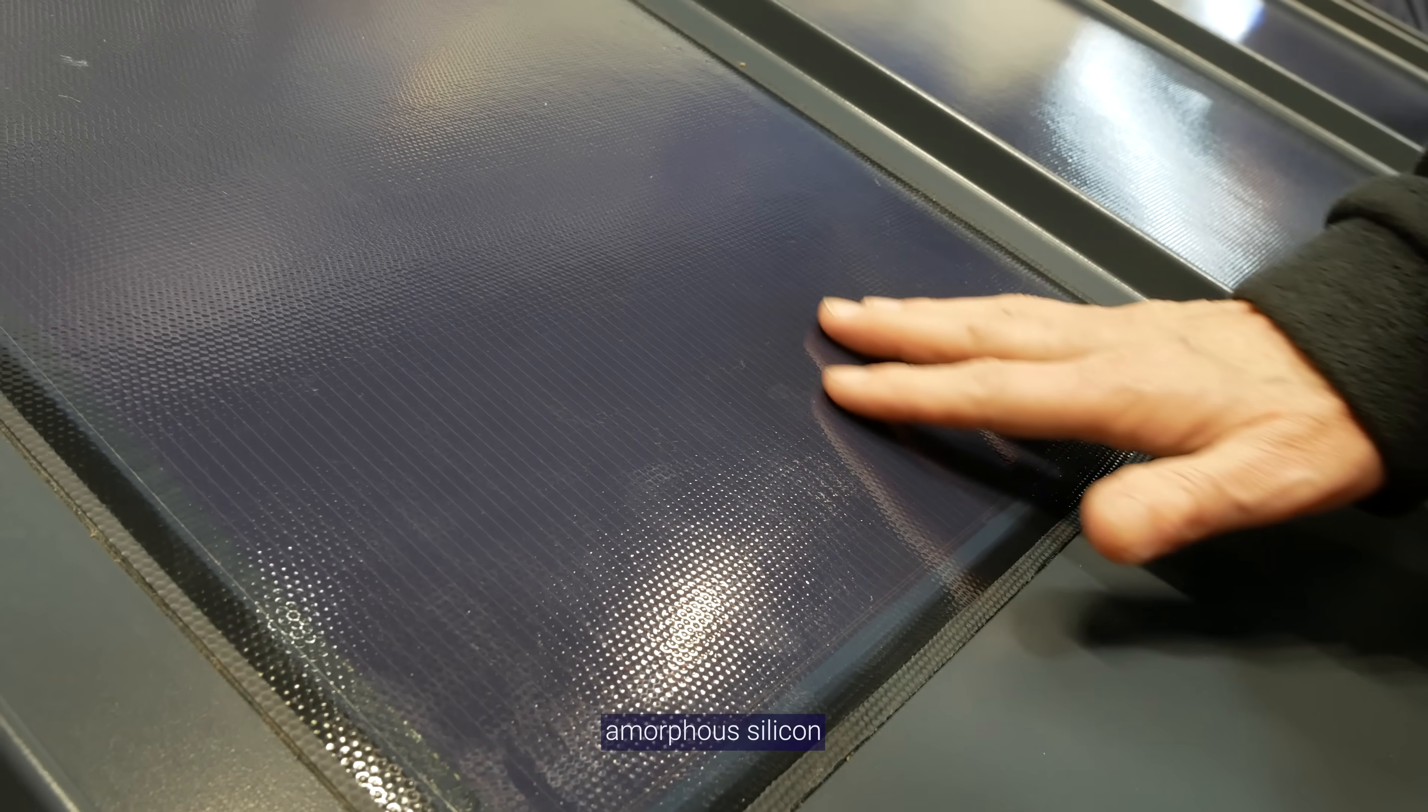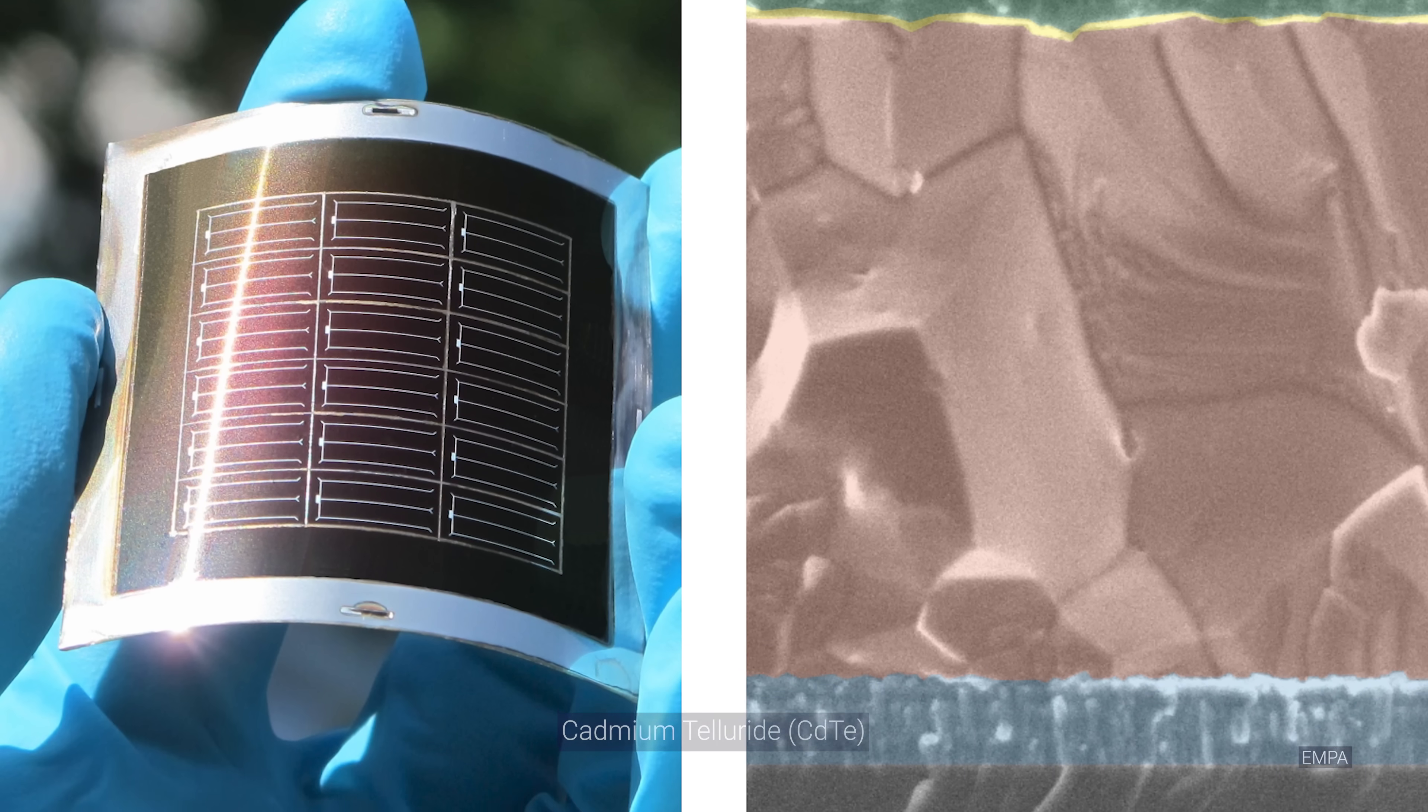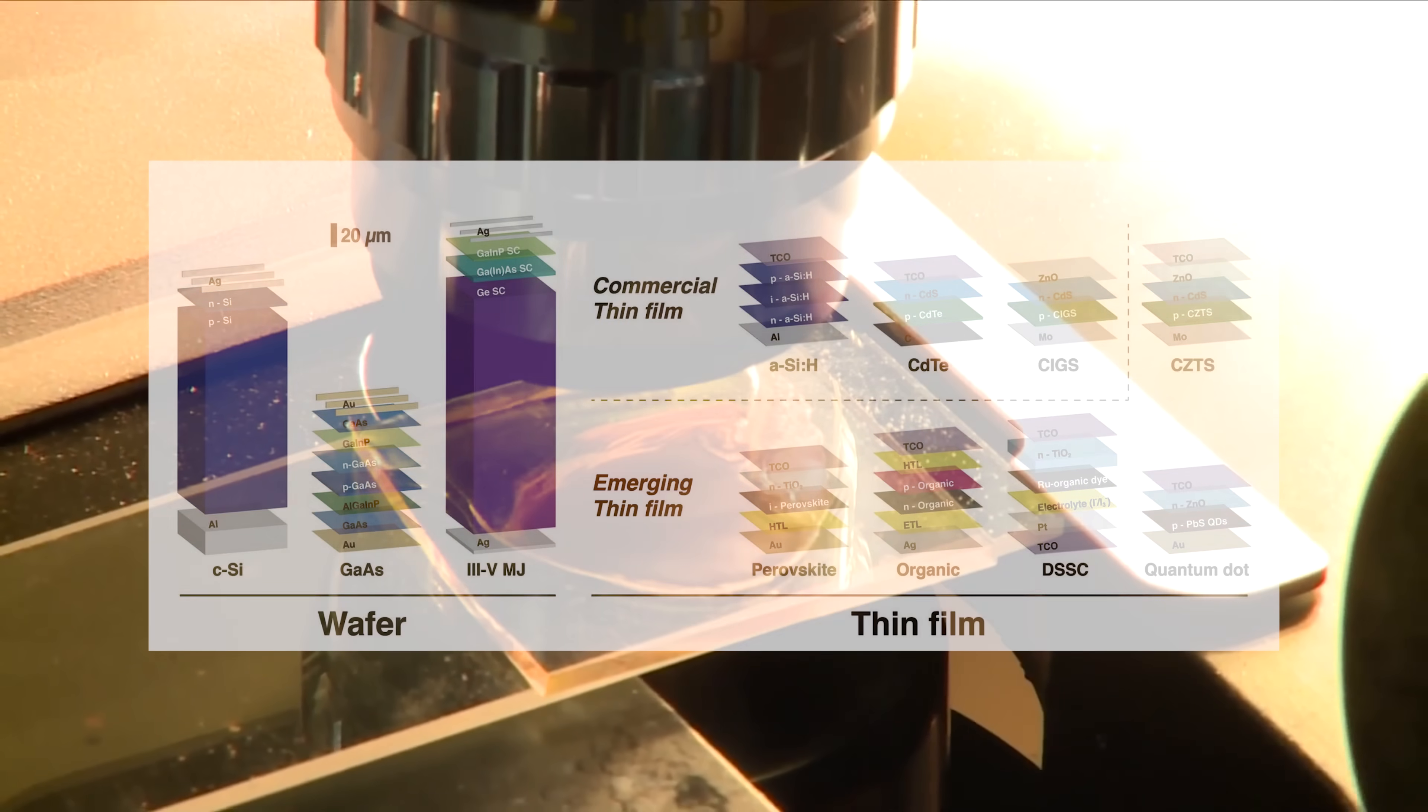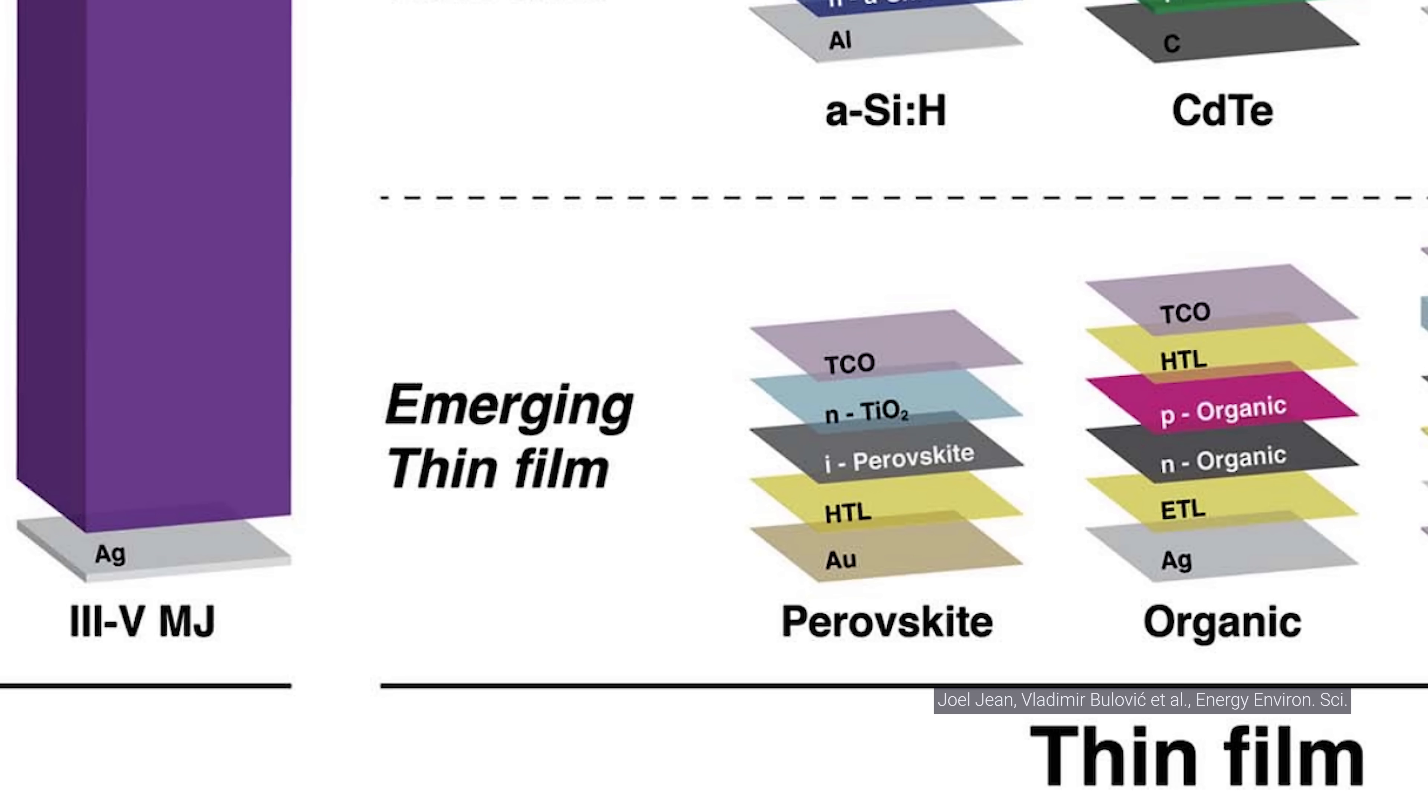You can make thin film cells from amorphous silicon, or more complex materials like cadmium telluride. But scientists have been on the hunt for better thin film solar technologies that can see more widespread use. These materials are known as emerging thin films. Currently, perovskites are the leading contender.